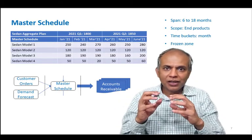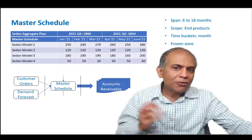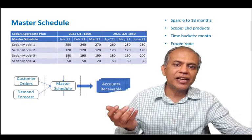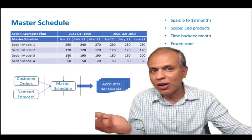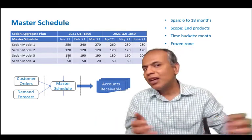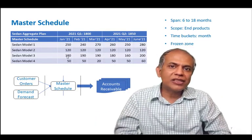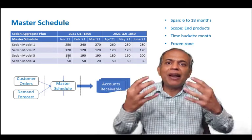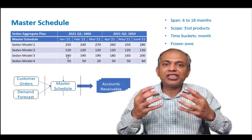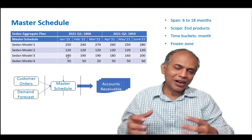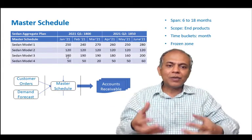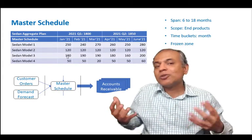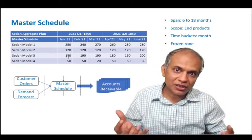Two things are important here. First, for example, I know that in January 2021 I'm going to sell 180 units of Sedan Model 3, and I know that each Sedan Model 3 sells for $30,000. So I can plan the cash inflow in my organization — I can do my accounts receivable, or AR, planning based on what I'm likely to get from this plan.